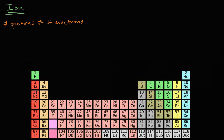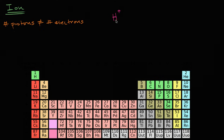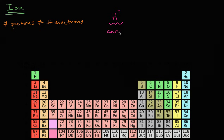For example, hydrogen in its neutral state has one proton and one electron. But if you were to take one of those electrons away, then hydrogen would have a positive charge, and essentially, in its most common isotope, it would just be a proton by itself. When we talk about a positive ion like this, where the number of protons are more than the number of electrons, we call these cations — just another word for positive ion.